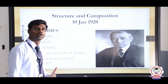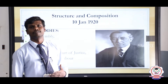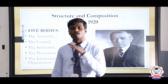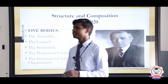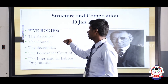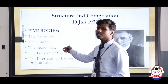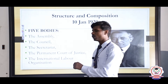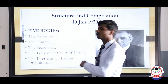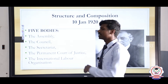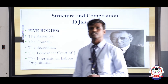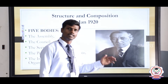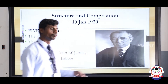Just like we have a number of organs in our body — eyes, nose, and everything — this organisation also has a number of organs, namely: the Assembly, the Council, the Secretariat, the International Court of Justice (also known as the Permanent Court of Justice), and the International Labour Organization. We will discuss each one.